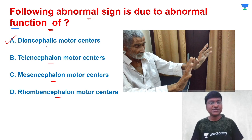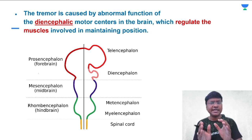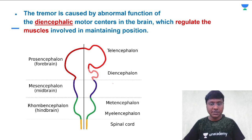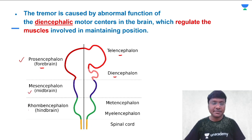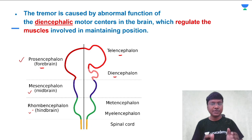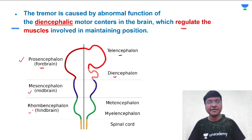This flapping tremor, which is also known as asterixis, is related to the diencephalon. Let me integrate this with basic neuroanatomy. The diencephalon is a part of the forebrain. The prosencephalon is divided into telencephalon and diencephalon. Mesencephalon is the midbrain and rhombencephalon is the hindbrain. The abnormality lies within the diencephalon because it regulates muscles involved in maintaining position, and abnormality in these diencephalic motor neurons causes flapping tremors or asterixis.